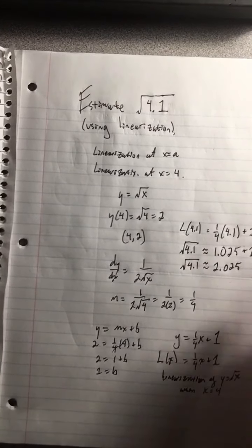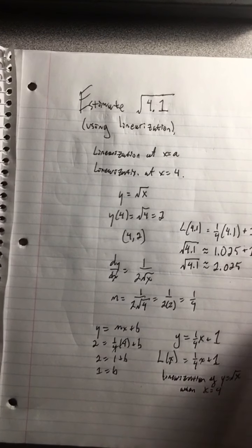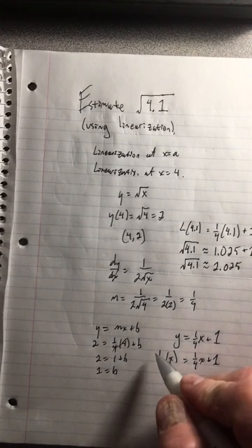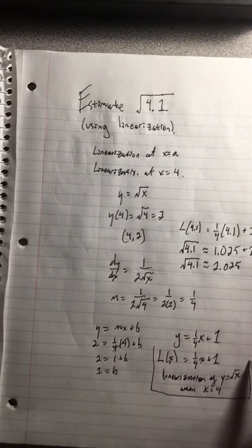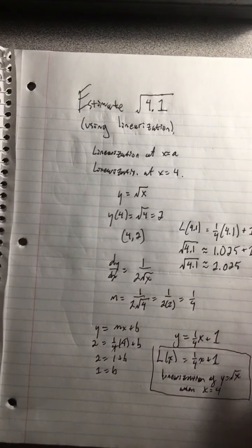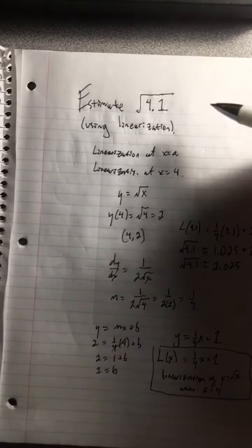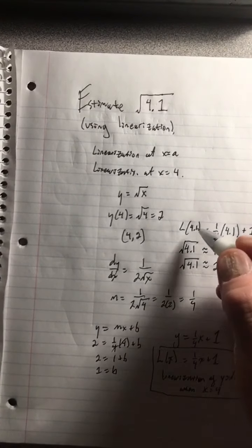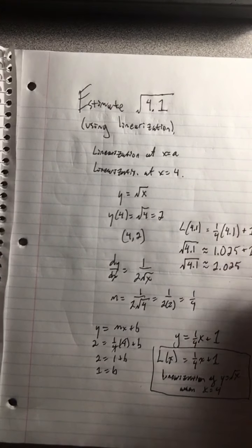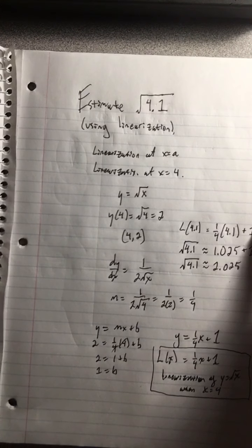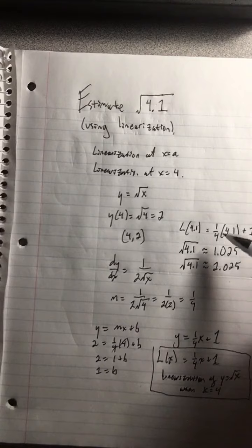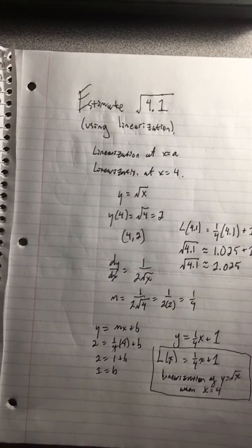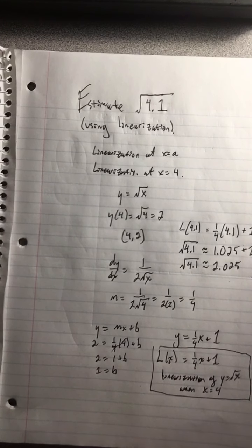Notice how easy the arithmetic was. It wasn't that hard. So we did the linearization. This is the linearization of the square root of x when x is 4. But we used it to make this estimate when we evaluated the line at 4.1. And the output of that line at 4.1 is our estimate of the square root function at 4.1. Math made simple.